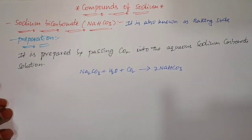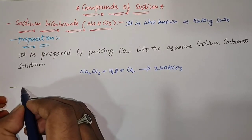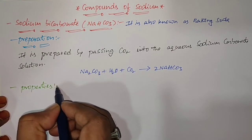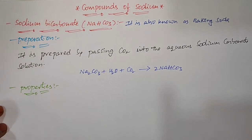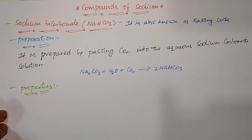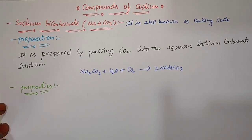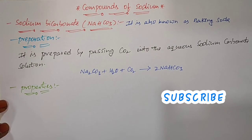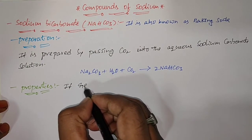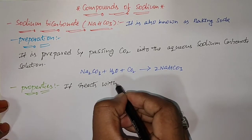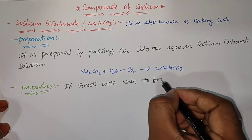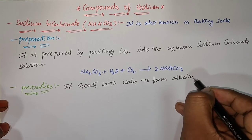Next are the properties of sodium bicarbonate. When sodium bicarbonate reacts with water, it forms an alkaline solution. The corresponding equation shows NaHCO3 reacting with water to form a mixture of sodium hydroxide and carbonic acid.